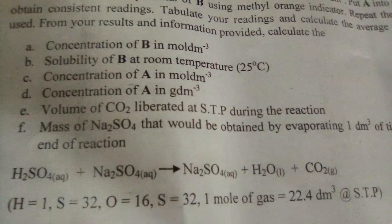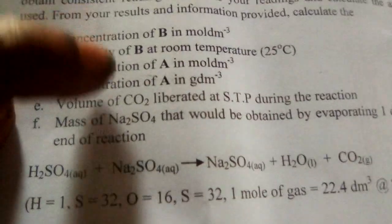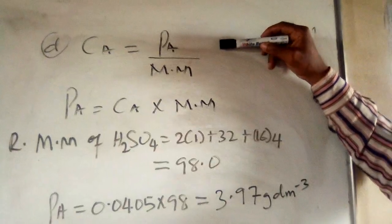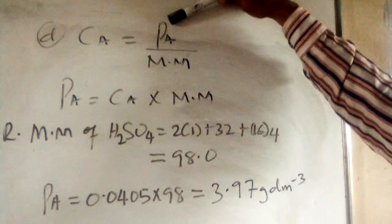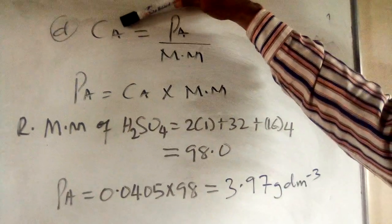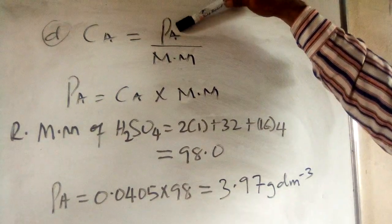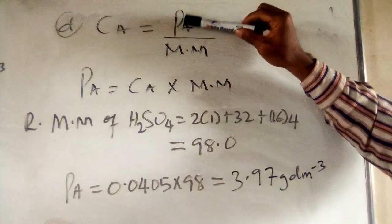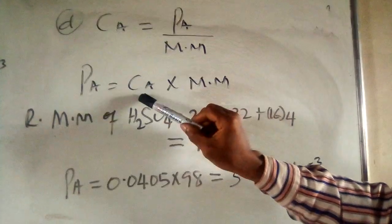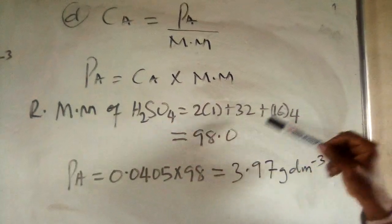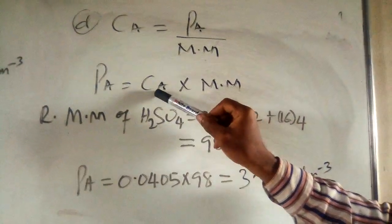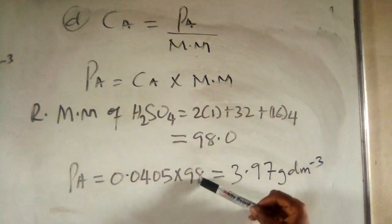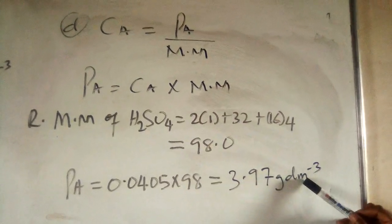Part D asks for the concentration of A in g/dm³. Using the formula: mass concentration ρA = CA × molar mass. The molar mass of H2SO4 = 98 g/mol. ρA = 0.0405 × 98 = 3.97 g/dm³ to 3 significant figures.